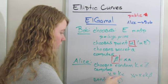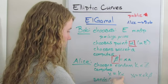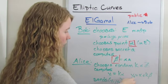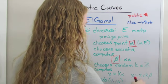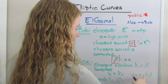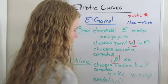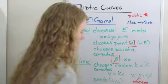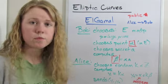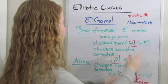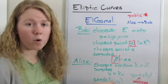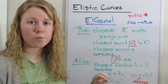She computes y₁, where it's k times alpha, because remember alpha is a public number, and y₂, where it equals x plus k times beta, where this x right here is the message. And then she uses the alpha and beta that she got from Bob, and then she sends the y₁ and y₂ to Bob.